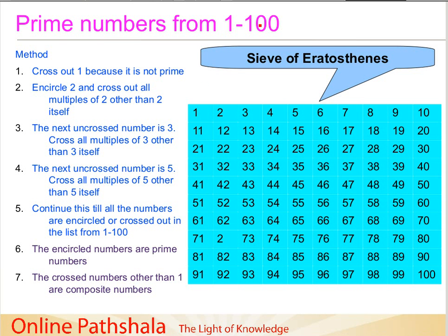In this lecture, we continue our discussion on prime numbers. I will be discussing a method by which you can find out the prime numbers from 1 to 100. This method was given by a mathematician named Eratosthenes, who lived somewhere during the 3rd century BC, and this method is known as the Sieve of Eratosthenes. We create a table and list the numbers from 1 to 100 as shown here.